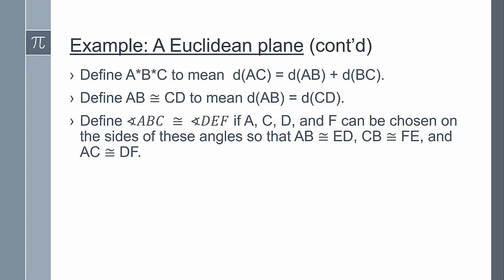We're going to define congruent angles in the following way. We say that angle ABC is congruent to angle DEF if you can choose the points A, C, D, and F on the sides of these angles so that segment AB is congruent to ED, CB is congruent to FE, and AC is congruent to DF. Then it can be verified that this model actually satisfies all the axioms for Euclidean geometry and therefore is a Euclidean plane.